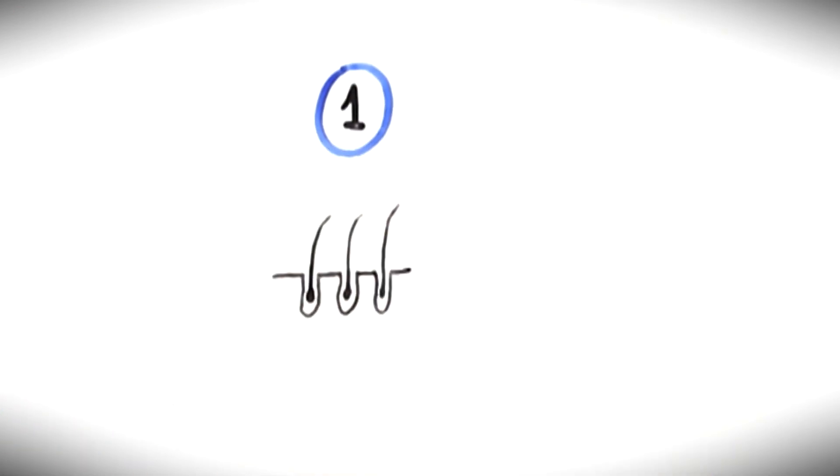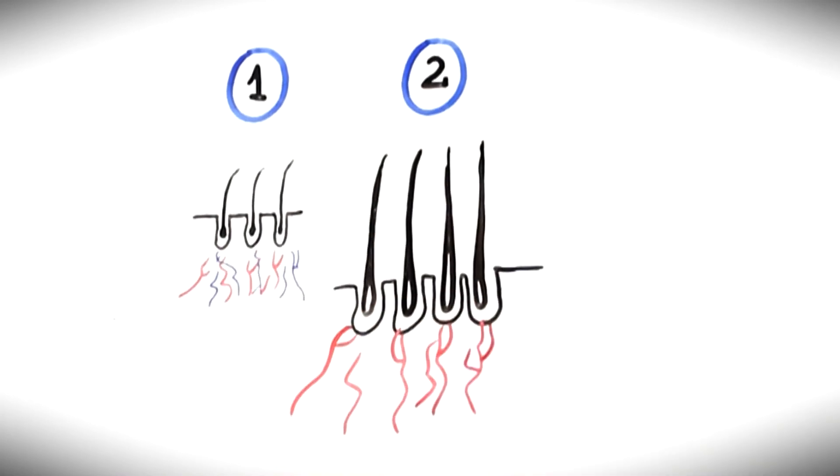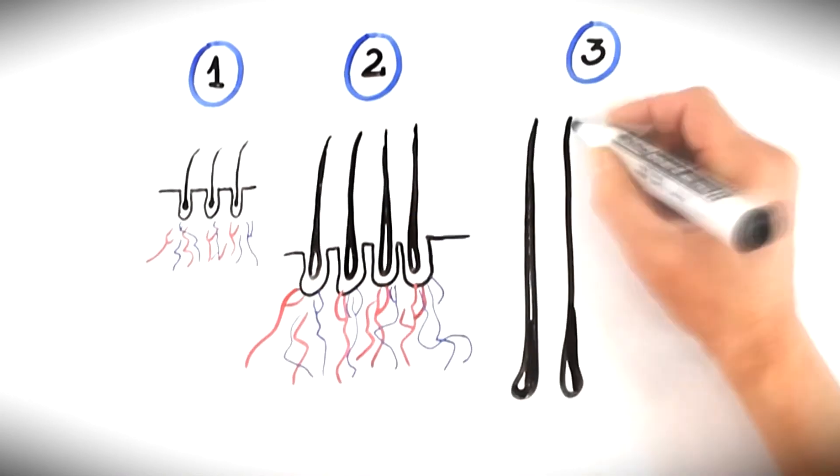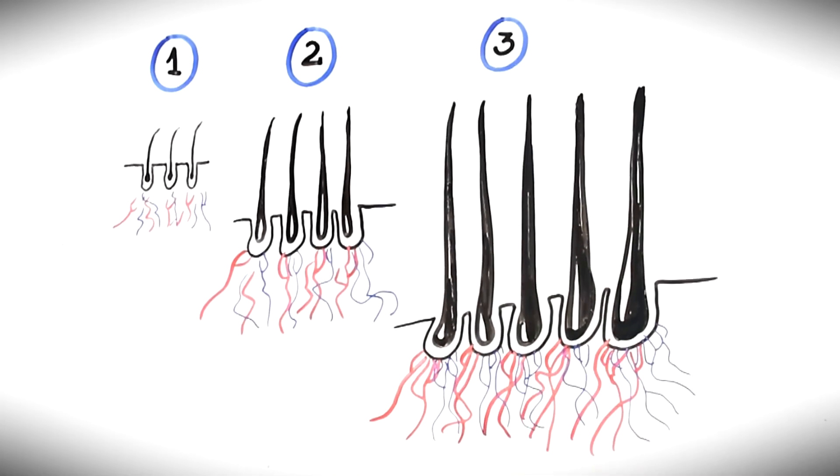In response to photostimulation, vascularization, blood supply and nutrients increase in the scalp and hair follicles. Follicles can reverse miniaturization, prevent additional hair loss, and restore healthy hair generation.